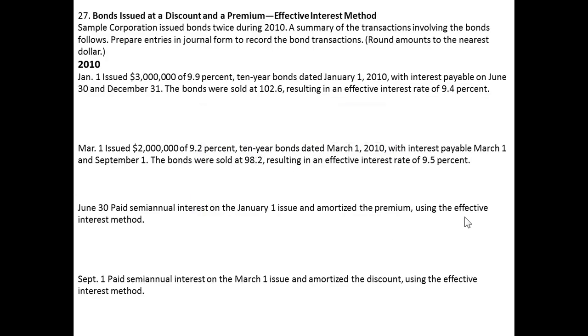Here's a comprehensive problem on the journal entries surrounding issuing bonds at a discount and a premium using the effective interest method. So on January 1,